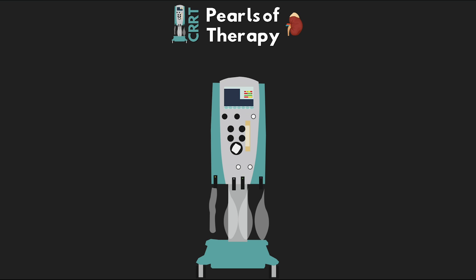This is the sixth lesson in the CRRT Explained series, and in this lesson we're going to be talking about the pearls of therapy. I'm basically just going to be going through some pearls that I've learned over the years and some common things that come up when running CRRT therapy. This isn't going to be an exhaustive troubleshooting list, but hopefully it contains some good information.